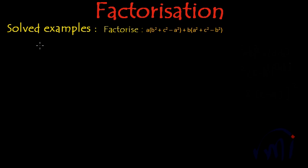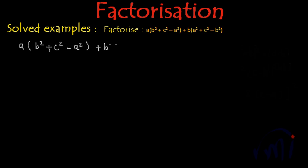Here we have to factorize A multiplied by B squared plus C squared minus A squared, plus B multiplied by A squared plus C squared minus B squared.